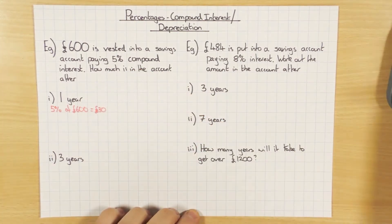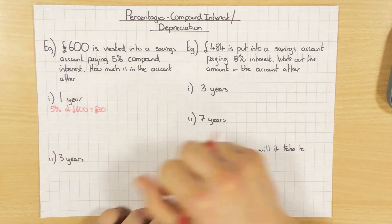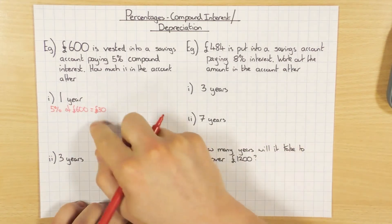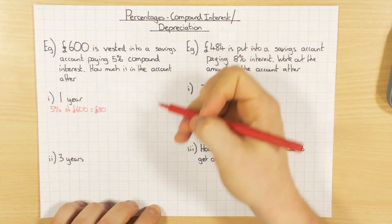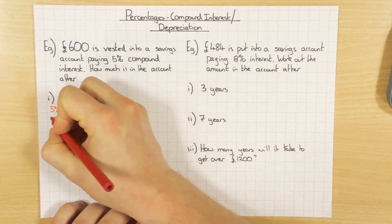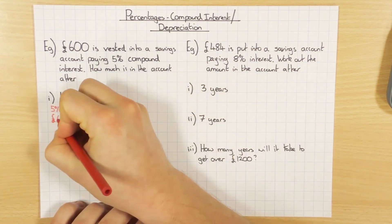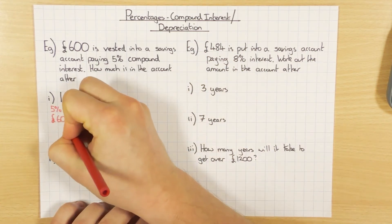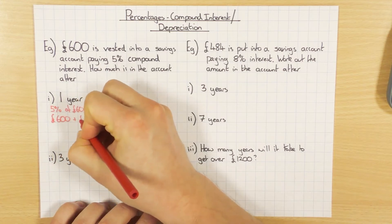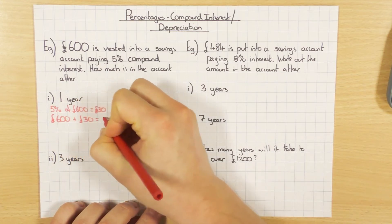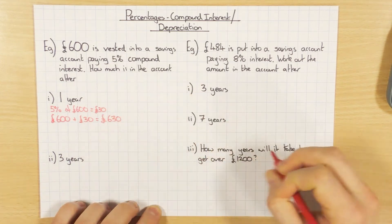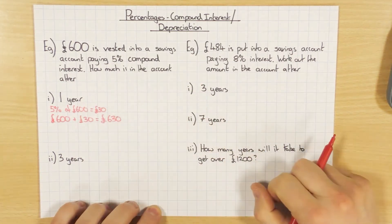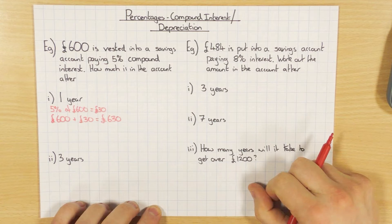So that's the first step, and then all you do to work out what it is for the first year is just add it on to the total, because remember compound interest means we are increasing. So £600 plus £30 gives us £630. So that's after the first year — it's just increased by 5%.